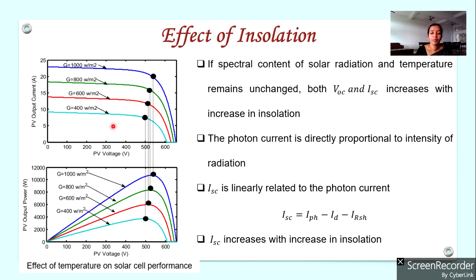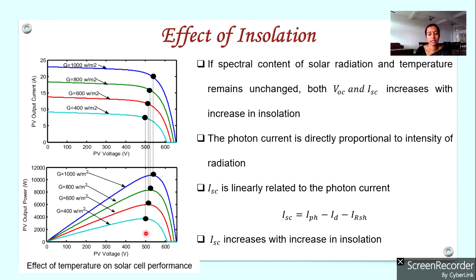So short circuit current increases considerably with irradiation and open circuit voltage has only a slight increment with increase in insolation. Now, when irradiance increases, both voltage and current increase, so maximum power also increases. The power curve shifts upwards with increase in irradiance, and the voltage corresponding to maximum power also increases.